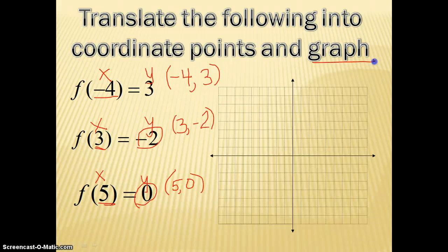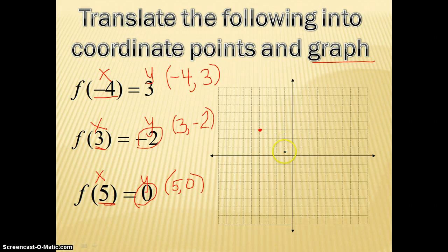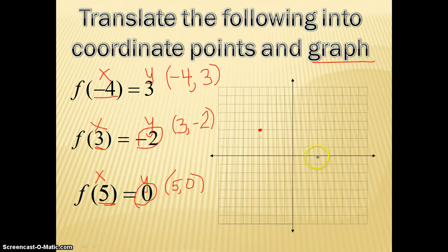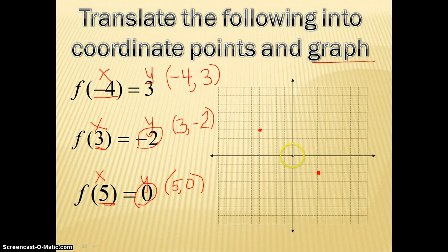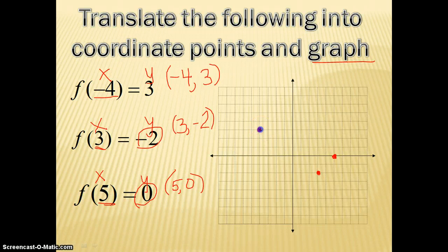Now it says to graph them. For negative 4, 3: start at 0, go left 4, then up 3 — my dot goes right here. For the next point, start at 0, go right 3, then down 2 because it's negative — dot goes right here. And the last one is 5, 0: go right 5, and don't move up or down because y is 0 — dot goes right here. So that would be my graph.